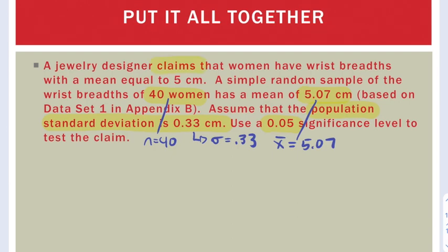Well, the claim was right here, that the mean equals 5 centimeters. So let's start setting up our hypotheses. Well, we're talking about mean, so both the hypotheses are going to start with mu. The null is always equal to, and we have 5 here. That number is going to be the same for the alternative.